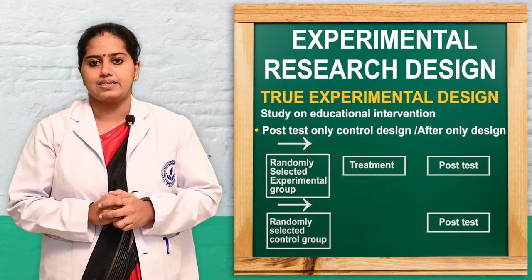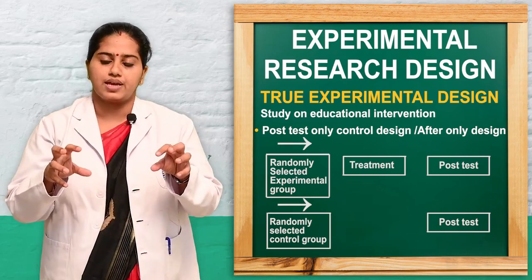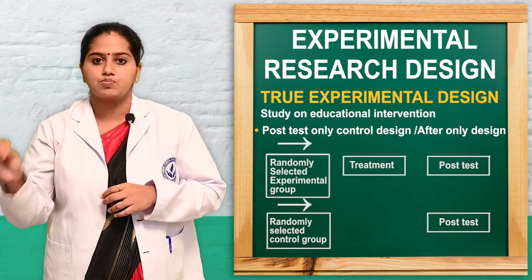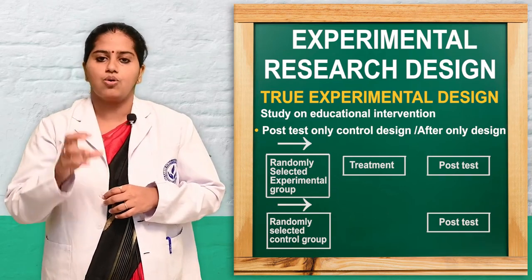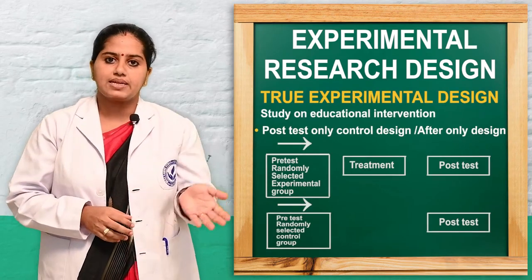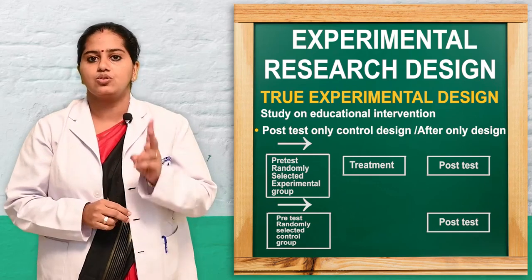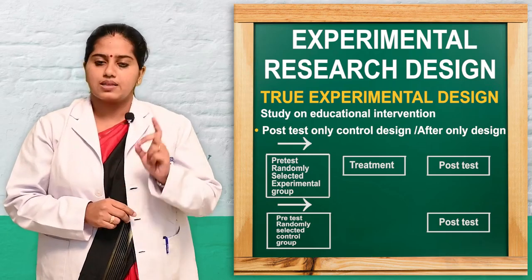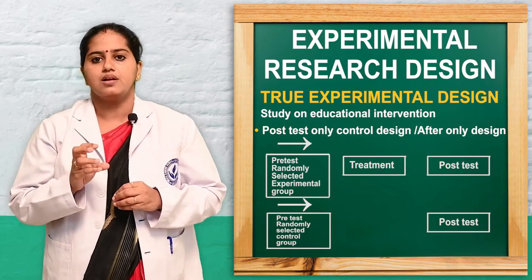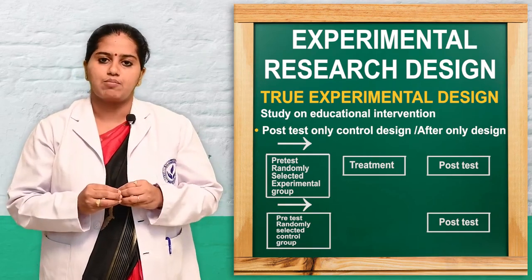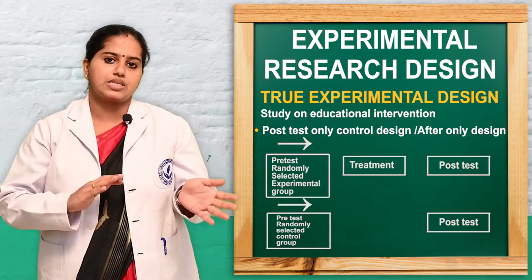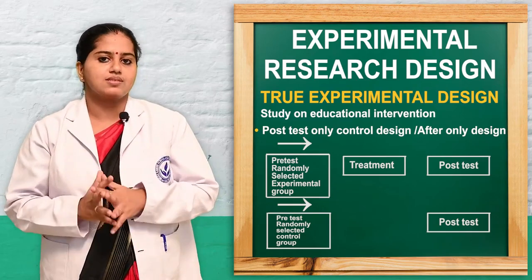The first true experimental design is post-test only design. Here, two groups are randomly selected. The first group receives treatment followed by post-test observation; the second group receives no treatment then observation. Since there is no pre-test, it is known as post-test only design. The second is pre-test post-test design: two groups — experimental and control — are randomly selected. The experimental group undergoes pre-test, treatment, then observation; the control group has pre-test but no intervention, then post-test. Effectiveness is then assessed.